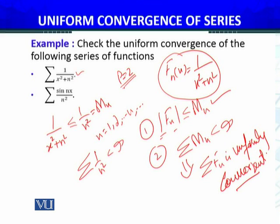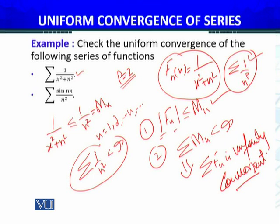Since all conditions of the Weierstrass M-Test are satisfied, we conclude that the first series of functions is uniformly convergent on the complete real line, which is from minus infinity to infinity.